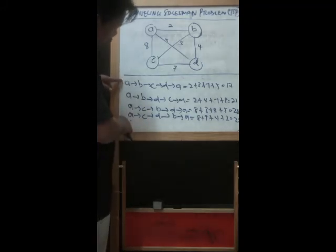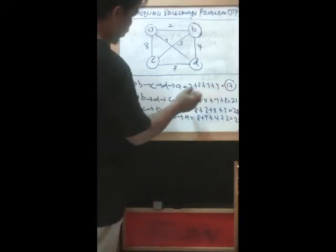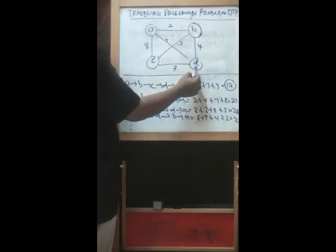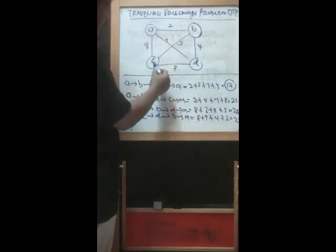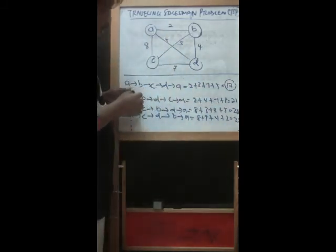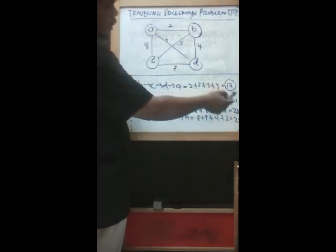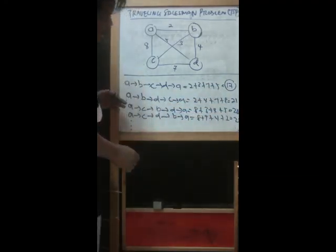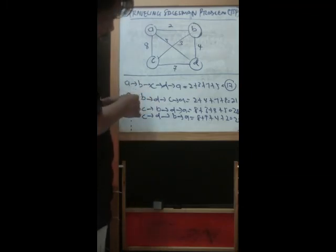For our case study here, just to stop here for now. This is the best one, which is A to B, B to C, C to D, D back to A. The total is 17 compared to the others 21, 20, 22. We have to complete this as we calculated just now for the permutation, 24 possible lists.